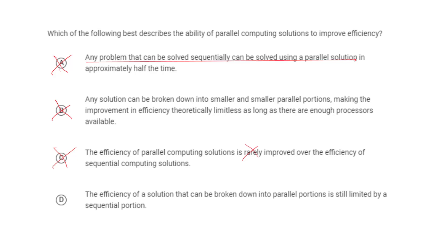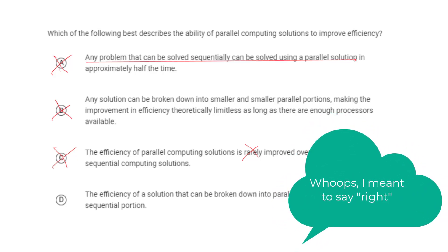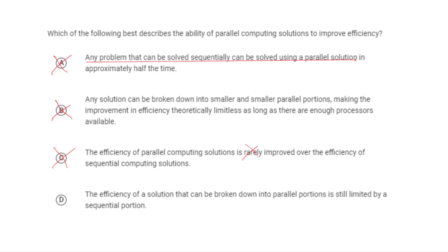So finally, the actual answer, we get it by elimination, but let's look at it. It says the efficiency of a solution can be broken down into parallel portions. It's still limited by a sequential portion. The reason this is correct, we can actually show this with an example here. Let's look at our earlier example where we talked about somebody who is grading a bunch of exams.